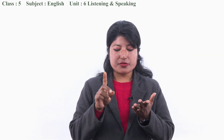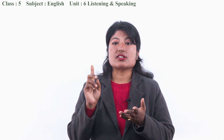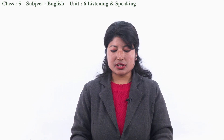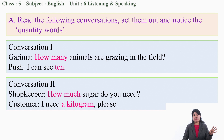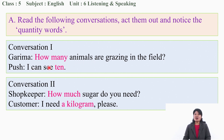We sang a song, then explored several dialogues and conversations, and learned about 'how much,' 'how many,' and expressing different quantities. Now look at the examples given in your textbook. Read the following conversations and act them out, noticing the quantity words - they're already highlighted. Conversation one - Garima and Puss: 'How many animals are grazing in the field?'